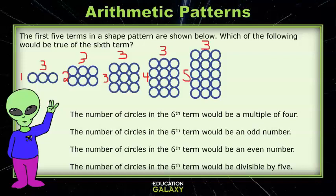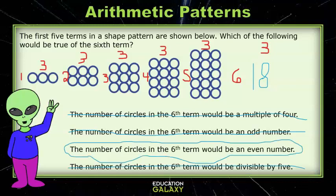The columns are staying the same, but the rows are increasing by 1 each time. That means the next shape would be 3 columns and 6 rows. That would give us a total of 18 circles, since 3 times 6 is 18. The answer choices are talking about the number of circles, 18. We know 18 is not a multiple of 4, and it's not an odd number, so we can eliminate those two answer choices. 18 is even, but it's not divisible by 5. So this answer choice must be correct.